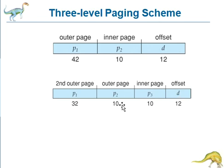The outer page table is still 2 power 34 bytes large. The 32-bit Motorola 68030 architecture supports a four-level paging scheme where the second-level outer page table itself is also paged. Next, the SPARC architecture with 32-bit addressing supports a three-level paging scheme. Next, we have the two-level paging scheme.